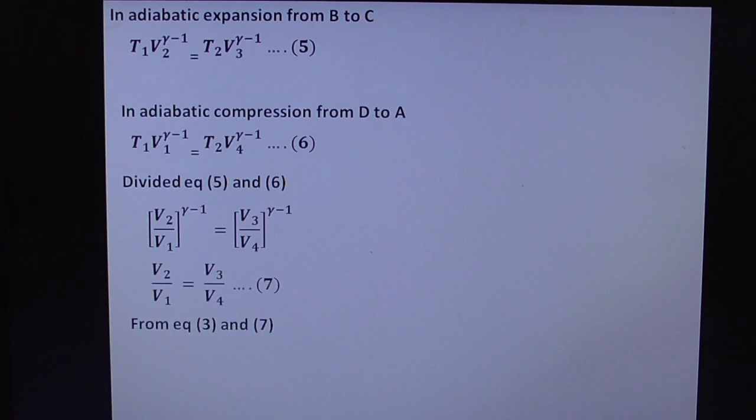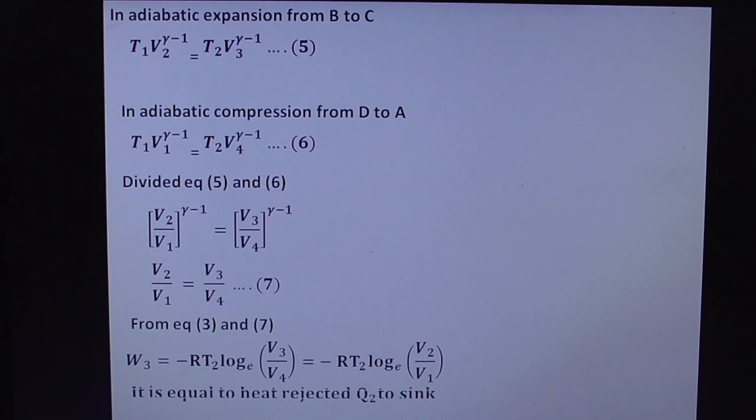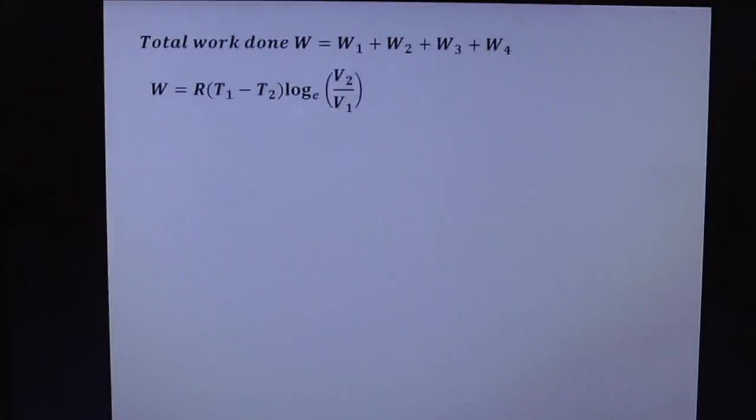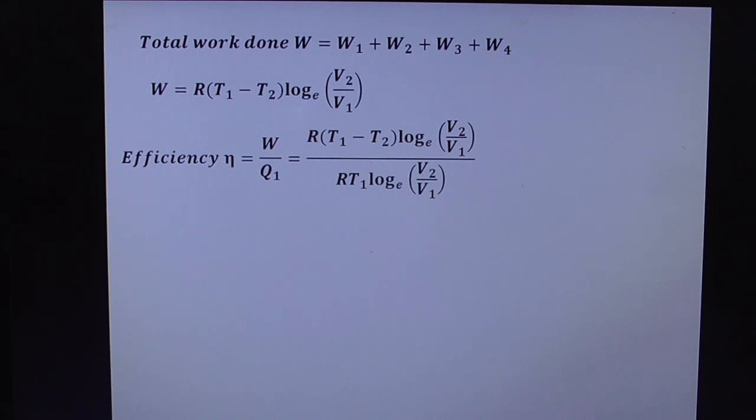By using all this, we get total work done: W₁ + W₂ + W₃ + W₄ = R(T₁ - T₂). The efficiency is work done by Q₁, W/Q₁, which is RT₁ log(V₂/V₁). Here, some mathematical application - solve this. R and R get cancelled, log terms get cancelled, so finally get T₁ minus T₂ by T₁. This is the required efficiency equation. For intermediate long questions, just write all these steps briefly, you get 8 out of 8.